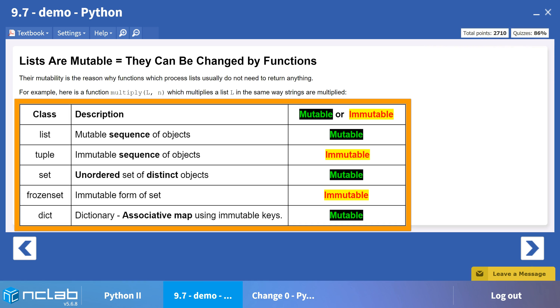Further on in the course, you will learn about sets and dictionaries, which are mutable, and frozen sets, which are immutable. As a programmer, you will be able to choose which containers best suit your application.